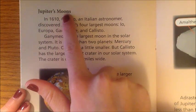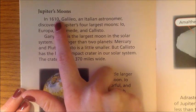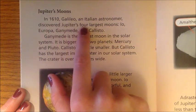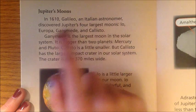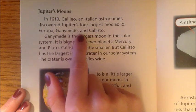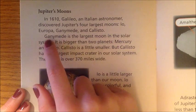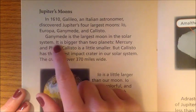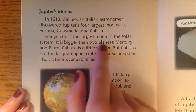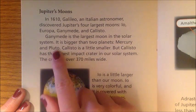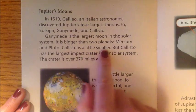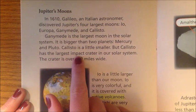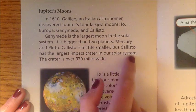Jupiter's Moons. In 1610, Galileo, an Italian astronomer, discovered Jupiter's four largest moons: Io, Europa, Ganymede, and Callisto. Ganymede is the largest moon in the solar system — it is bigger than two planets, Mercury and Pluto. Callisto is a little smaller, but Callisto has the largest impact crater in our solar system, over 370 miles wide.